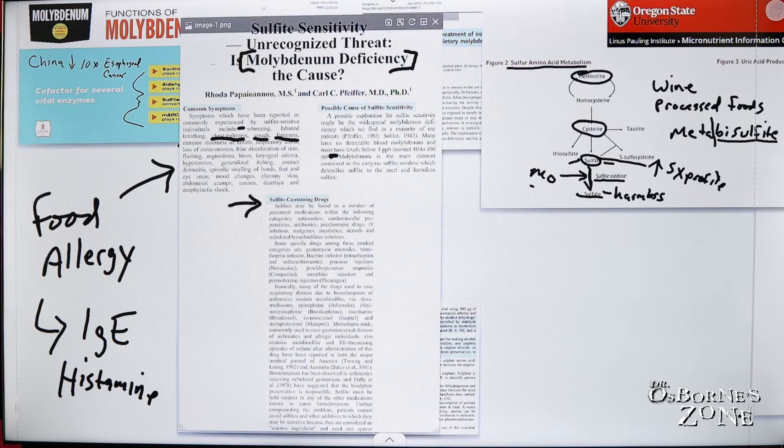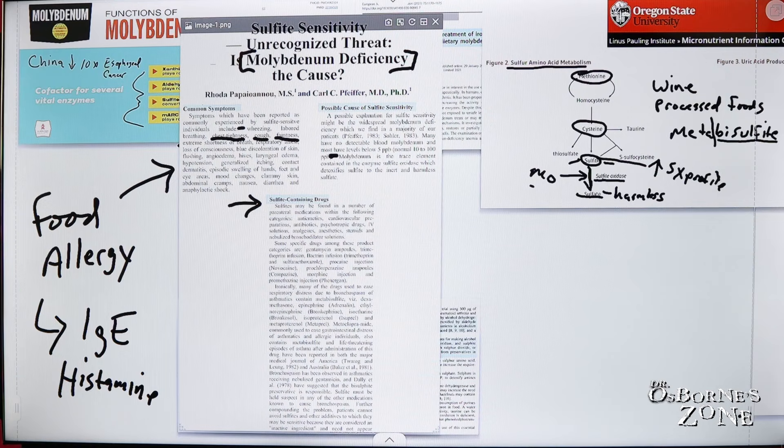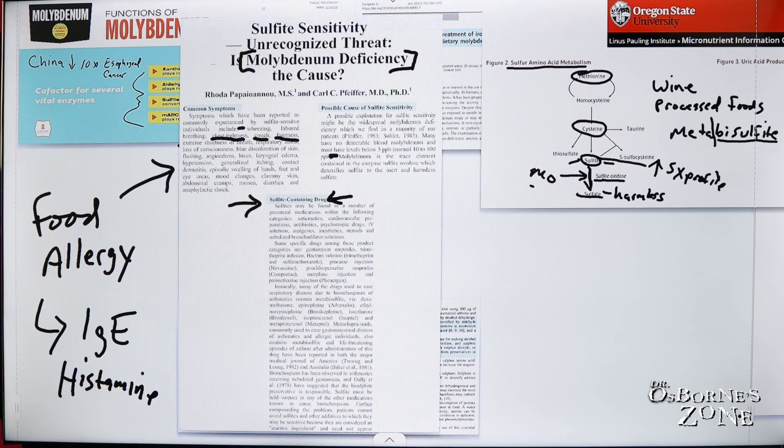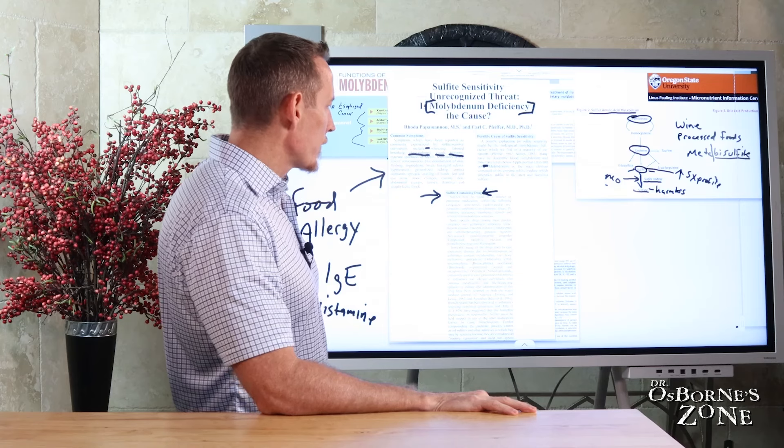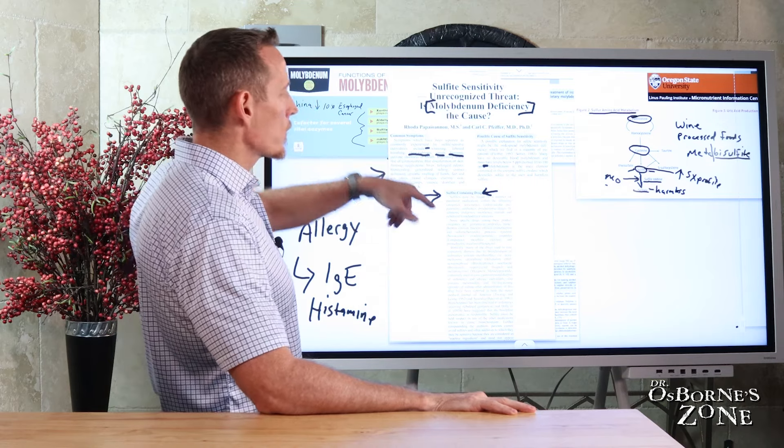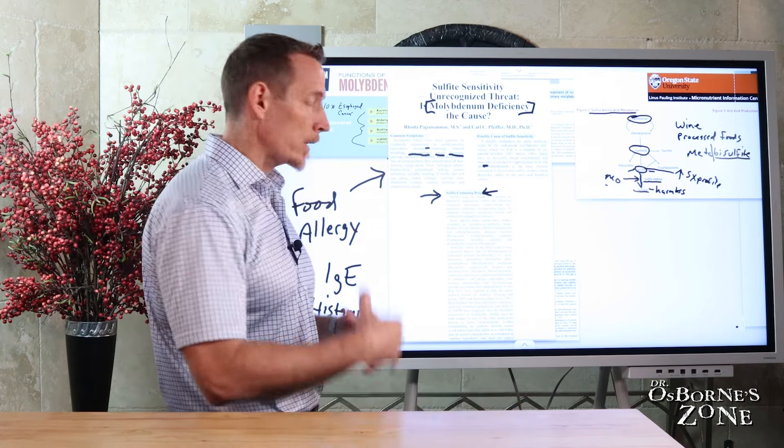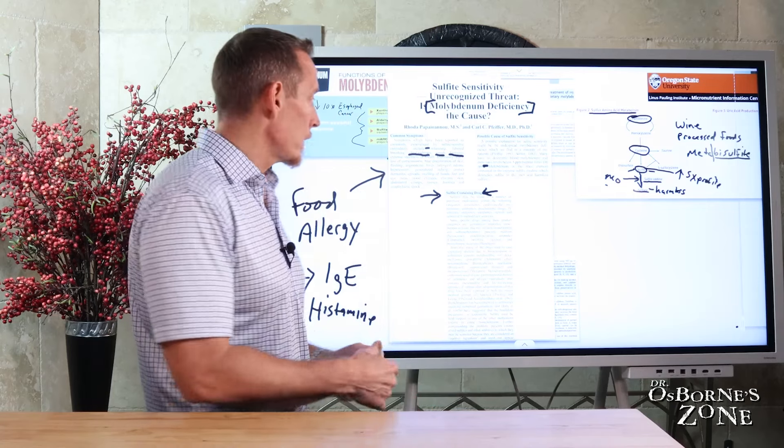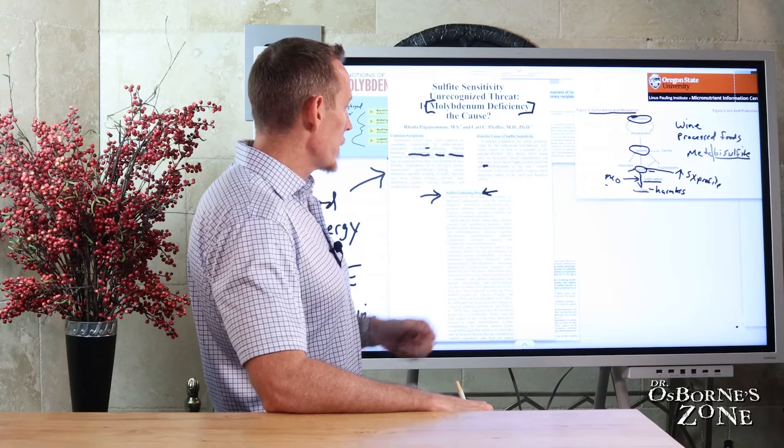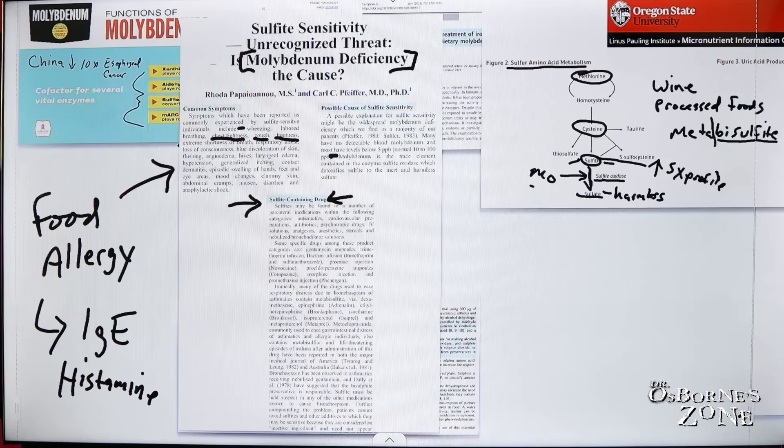And then you also have something else to consider. Beyond the foods, the processing items that contain sulfites, you also have a number of medications or drugs that contain sulfites as well. And so this is a list of some of those medications. So you can see here some common antibiotics like gentamicin and Bactrim can contain sulfites. And many people have recorded or reported these types of symptoms after using these types of antibiotics. So again, the question is, do you have an allergy to the antibiotic or do you have a sulfite sensitivity? And that's a question that molybdenum might be able to answer for many of you.